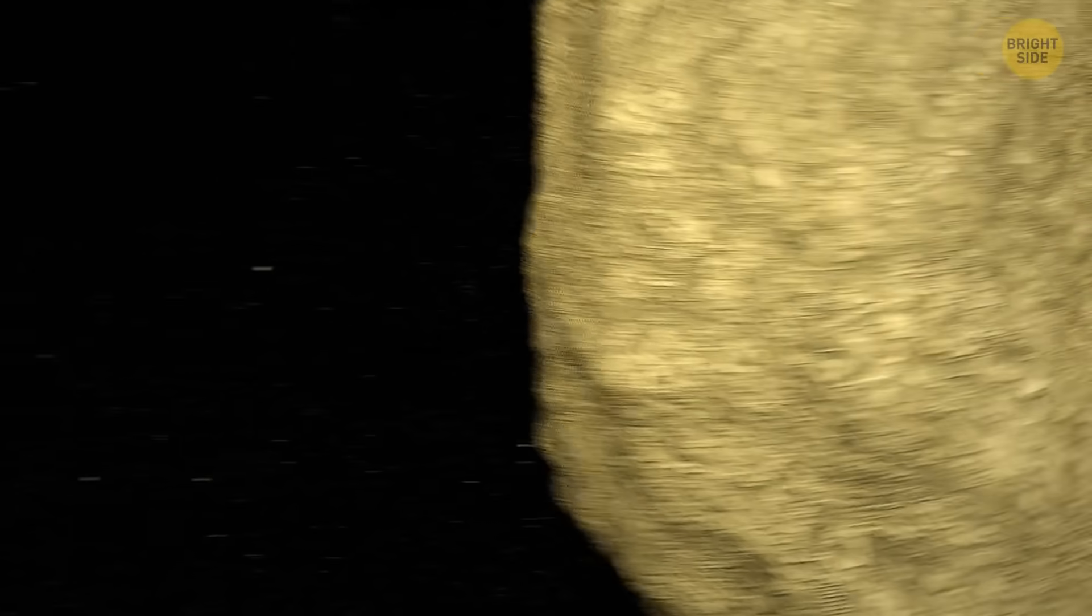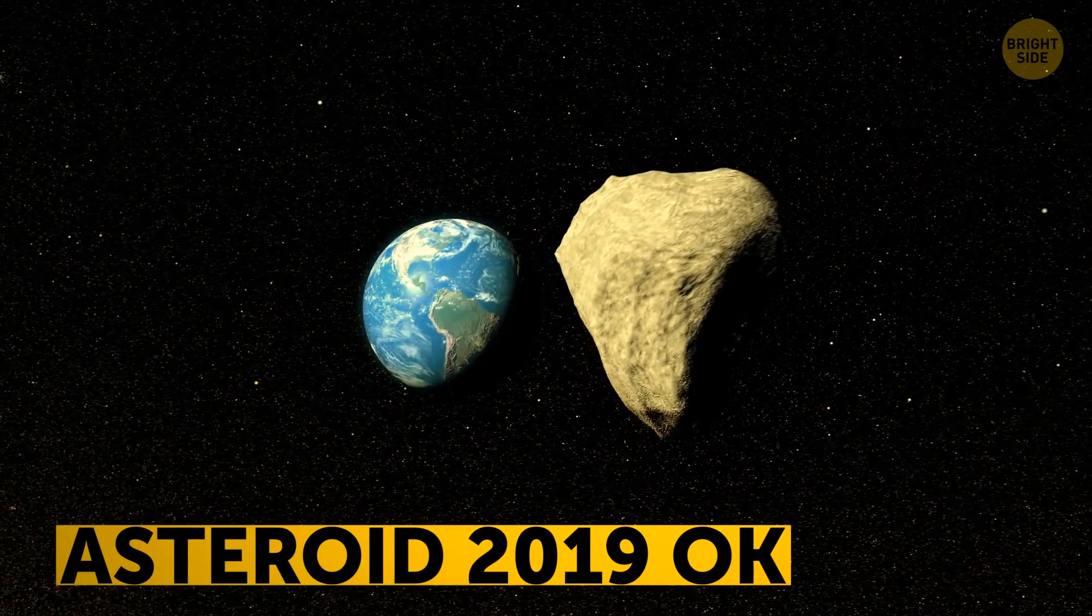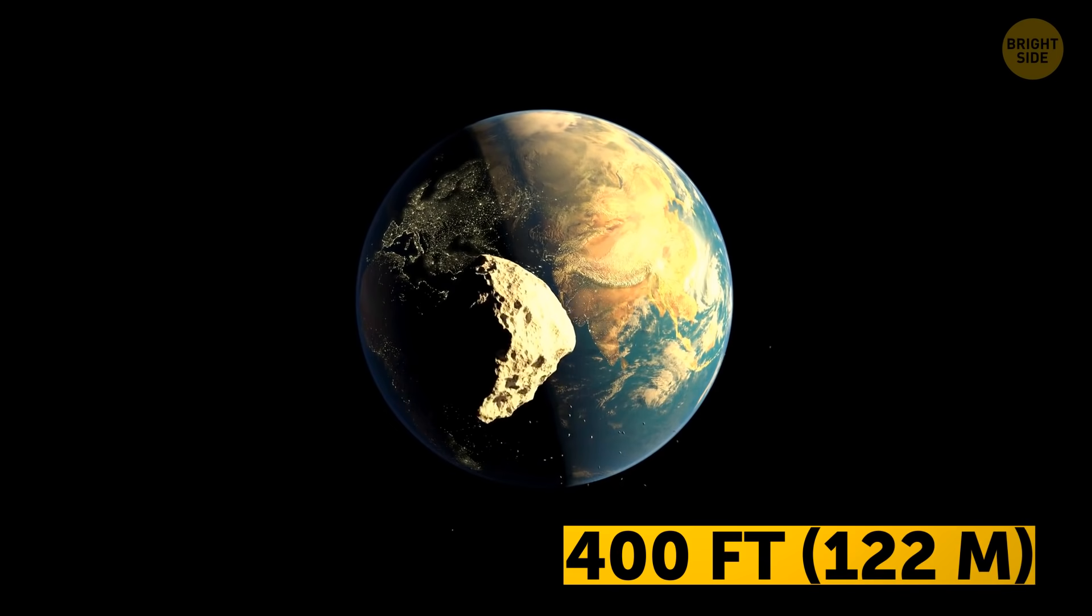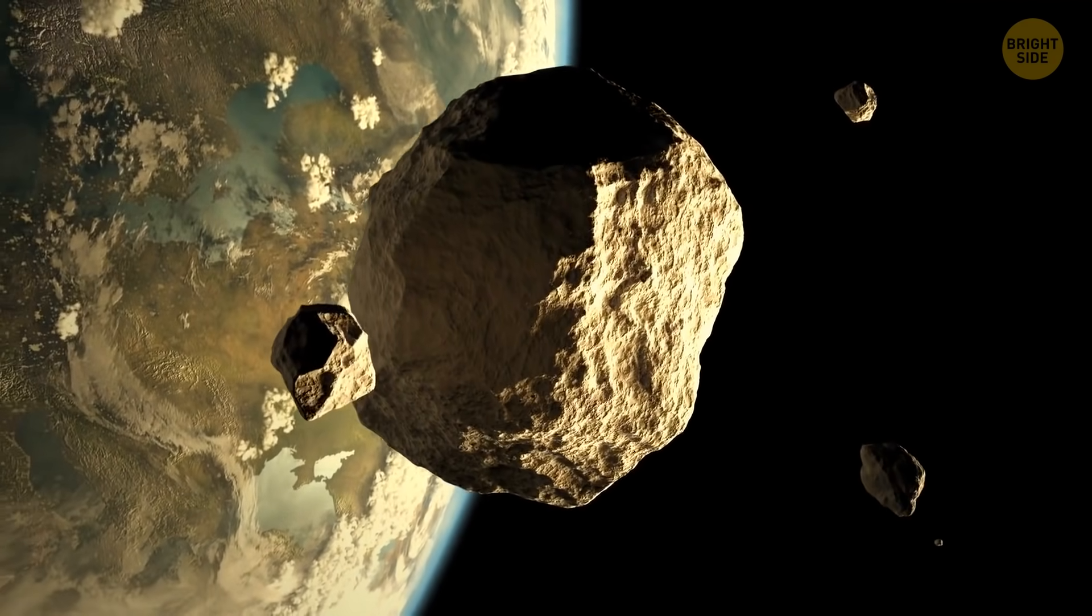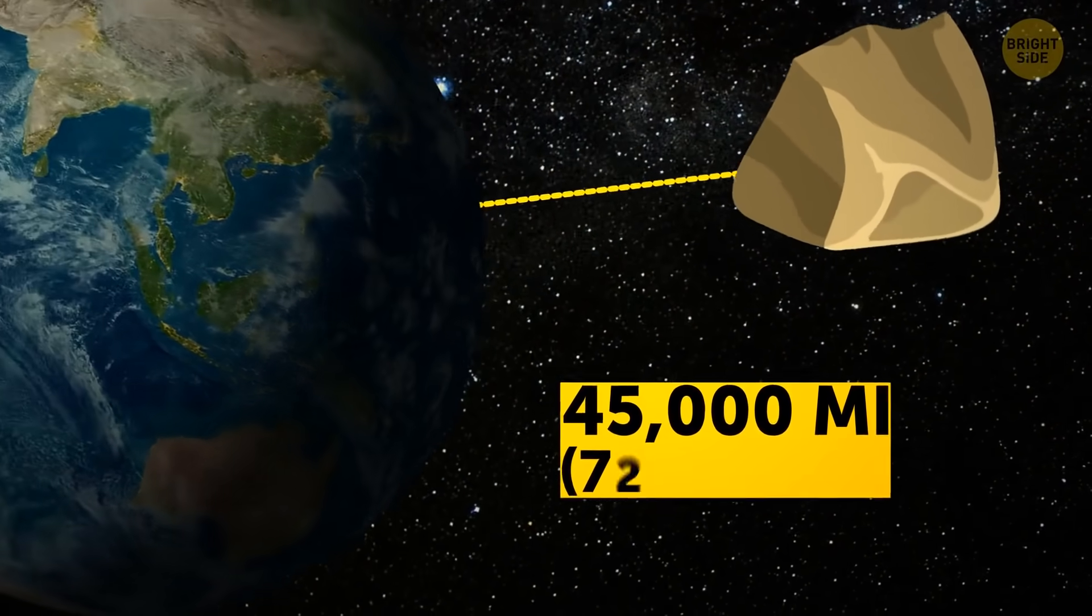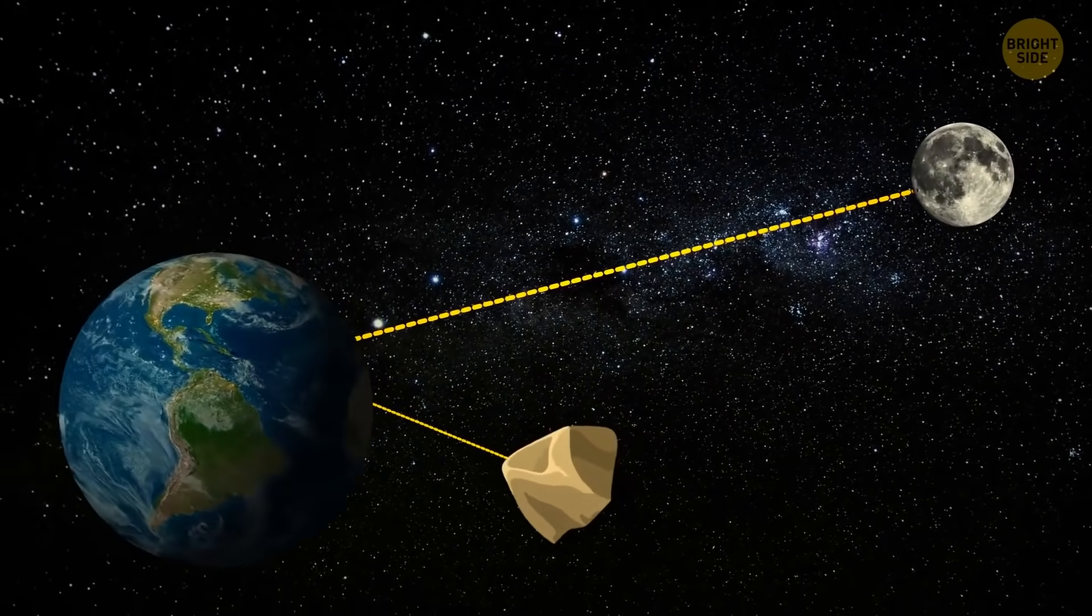Asteroid 2019 OK scared scientists by sneaking up on our planet in July of 2019. This rather large rock, up to 400 feet across, appeared seemingly out of nowhere. It traveled uncomfortably close to the Earth, a mere 45,000 miles away. That's less than one-fifth of the distance to the Moon.